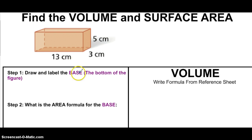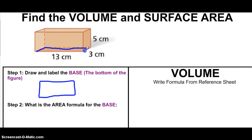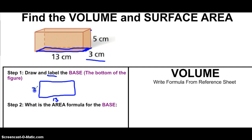Step one: I'm going to draw and label the base. The base looks like a rectangle — that's the bottom part. What are the side lengths? The length is 13, and the width — it's either 3 or 5, and you can see right here that's the width, so it's 3. The 5 is the height.